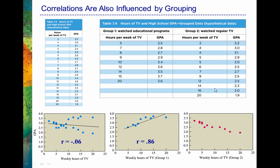Now when we look at the second group — students watching entertainment-type, somewhat mindless programming — the trend line looks very different. Here it's clearly heading downward, characteristic of a negative correlation. These data points conform very closely to that trend line, suggesting a strong correlation of -0.95. So the bottom line is that sometimes groupings of variables obscure relationships. When we looked at the data all together, we didn't see much of a relationship, but when we separated the groups, we saw clear relationships between the two variables.